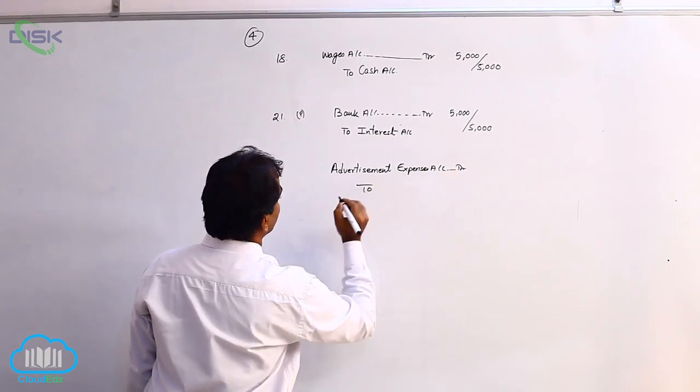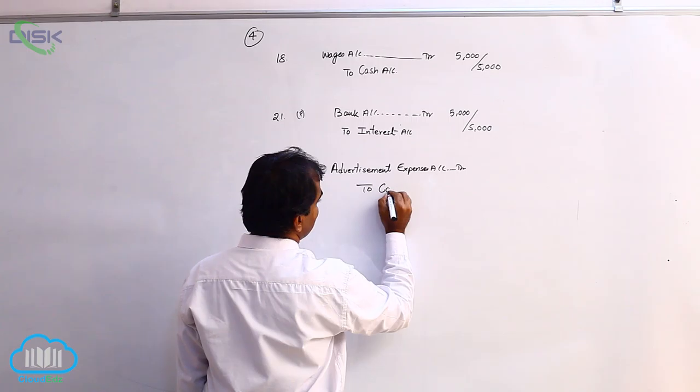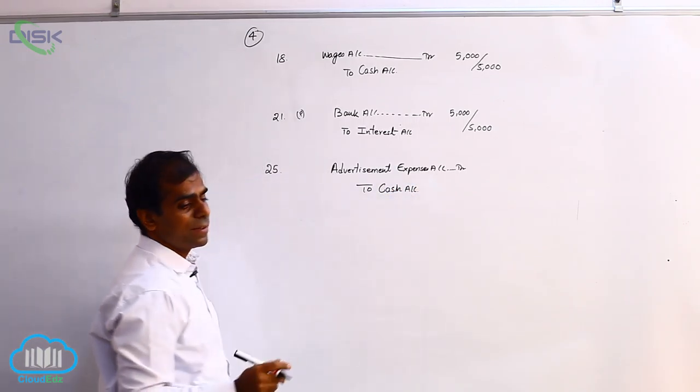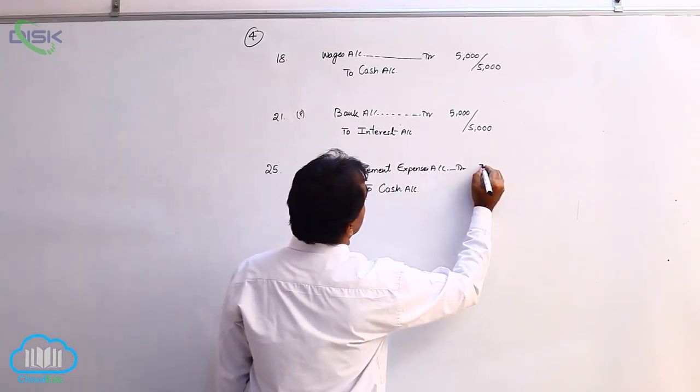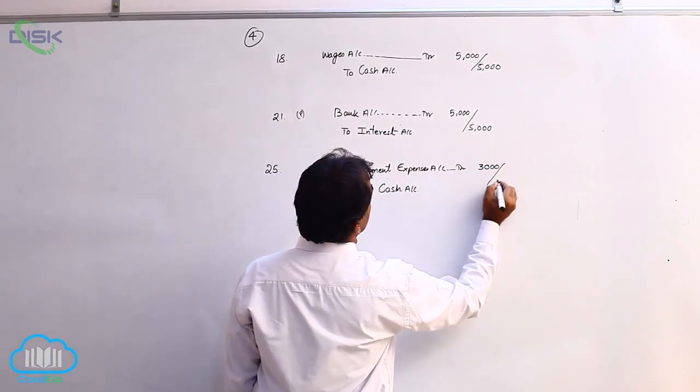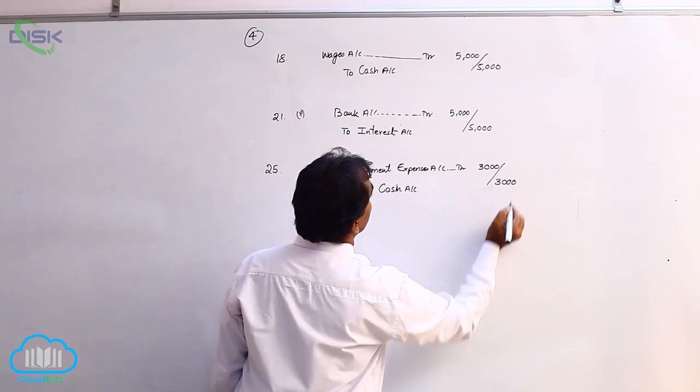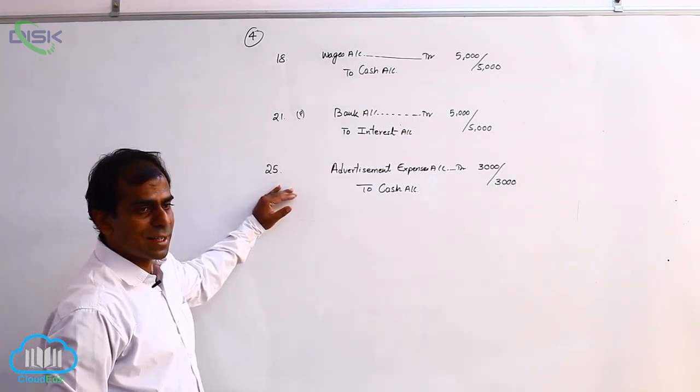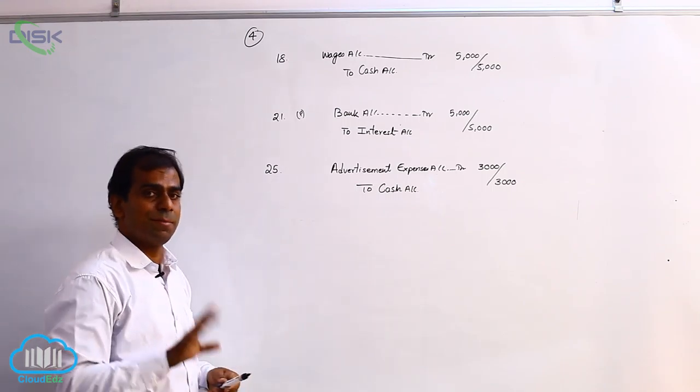As we paid cash, cash is real account and it is going out, so credit what goes out. The amount is 3000. Narration would be being advertisement expenses paid.